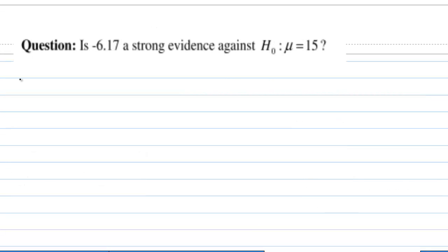The question is: is negative 6.17 strong evidence against the null hypothesis H0, mu equal to 15? We need to ask, what is the probability of z less than negative 6.17? This number is called the p-value.